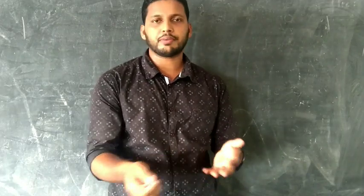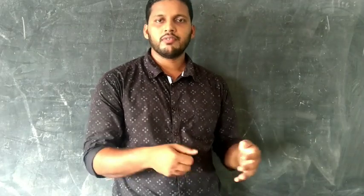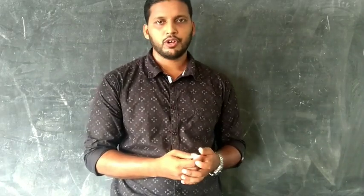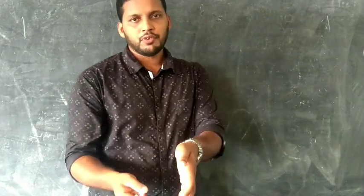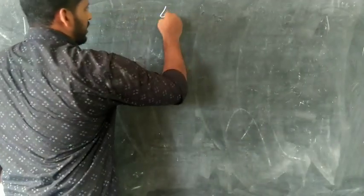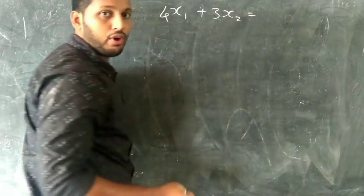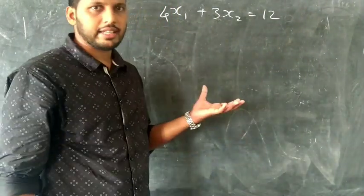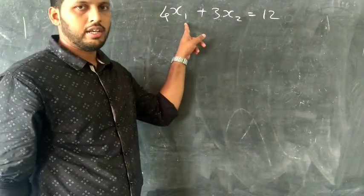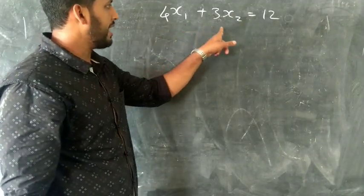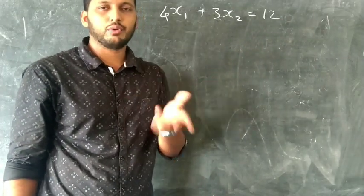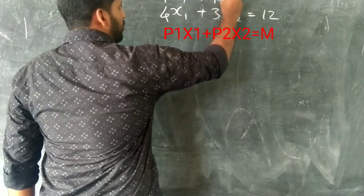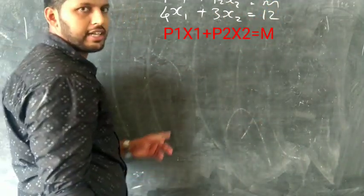P1 is a way to get the price. We will be able to get the budget and the vertical intercept. Suppose if the budget line equation is 4x1 plus 3x2 is equal to 12 — draw a budget line.